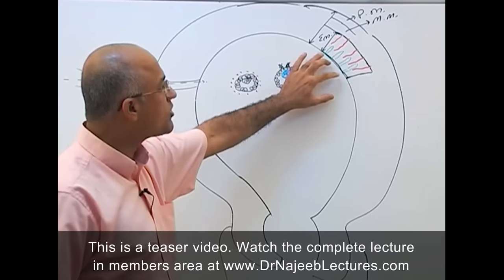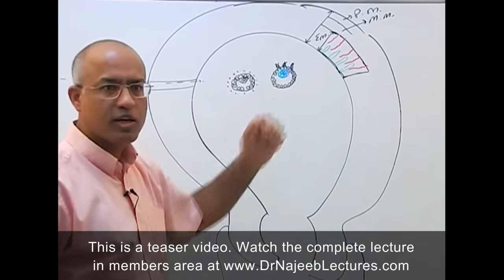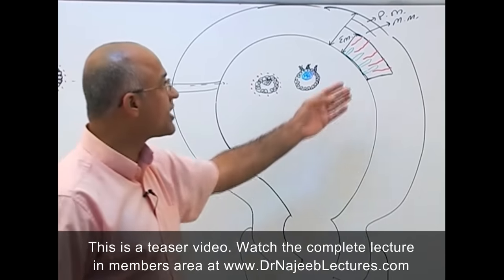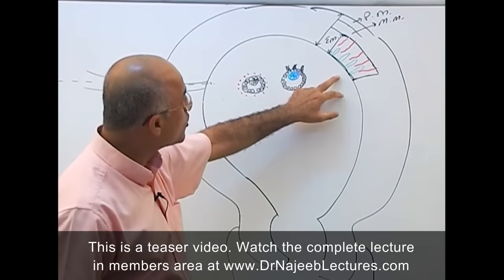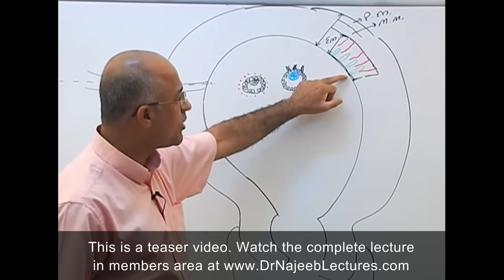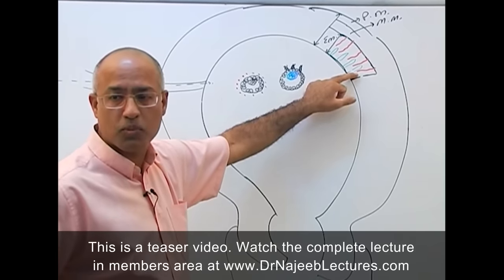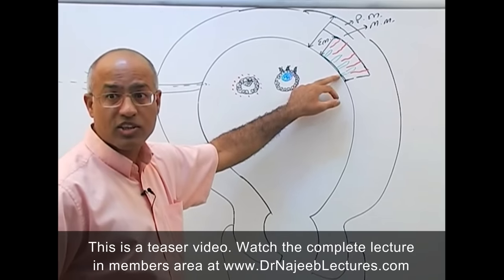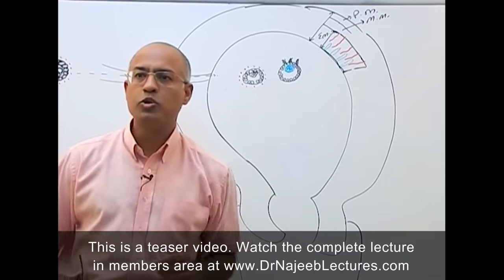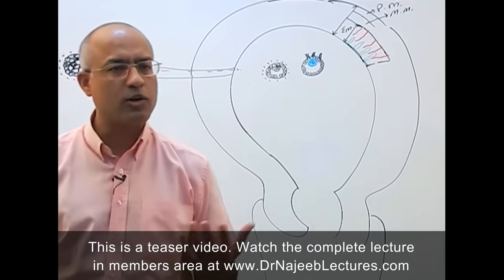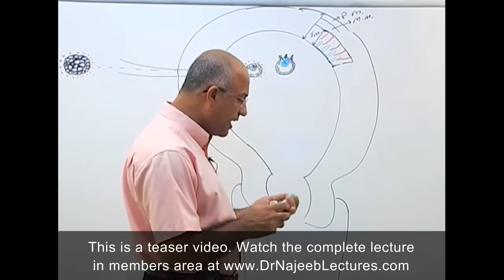The endometrium is getting ready for the incoming conceptus — essentially giving it a warm, soft red carpet welcome. It is highly vascular with the intention to provide extra nourishment. Glandular secretions are also very nutritive, and the cells present there are storing lots of glycogen and lipids.